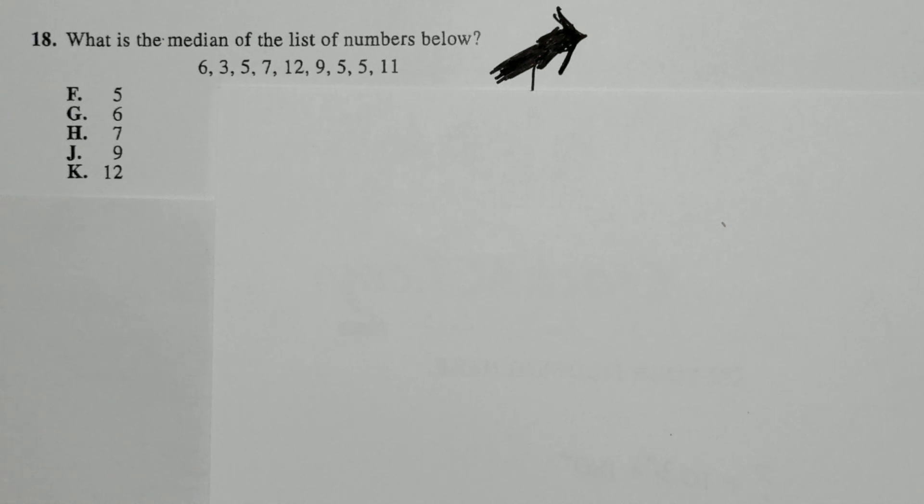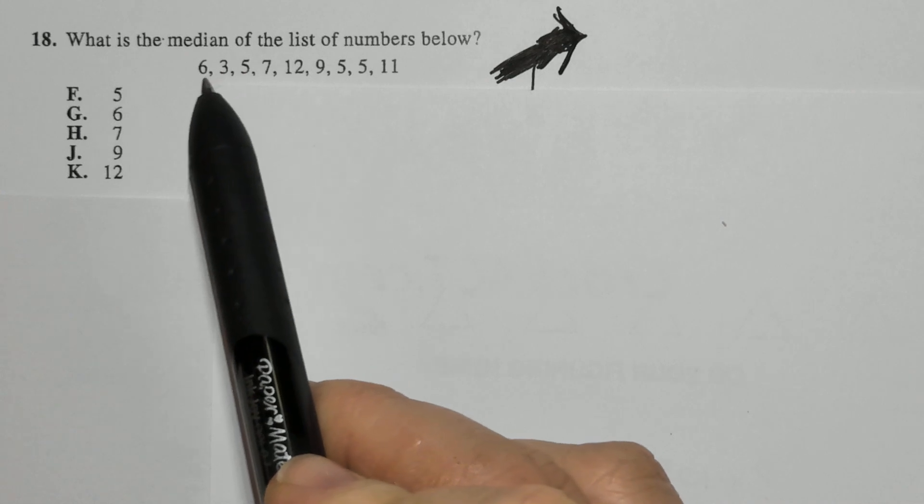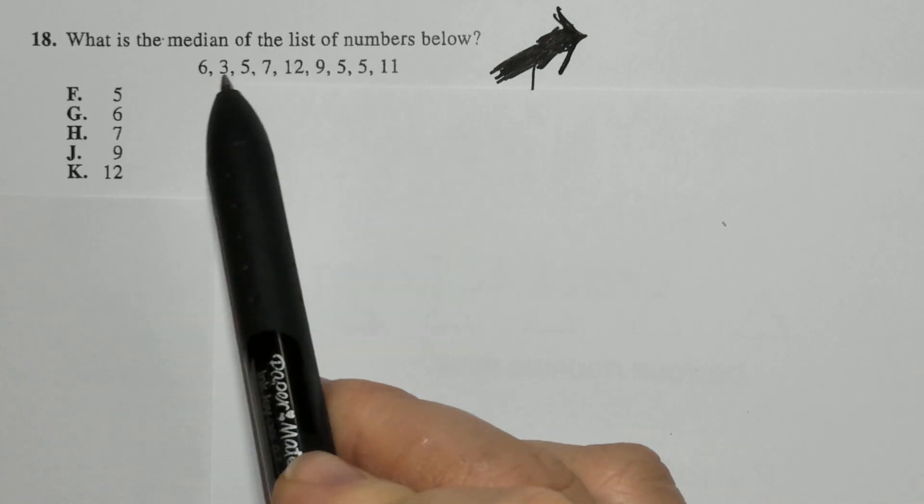In this problem, I'm asked to find the median of this set of data. So first, I want to figure out, is there an even number or odd number of items?